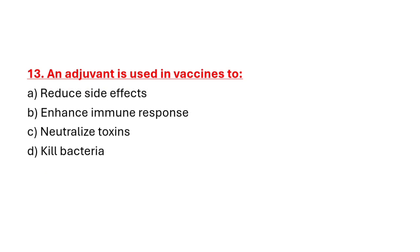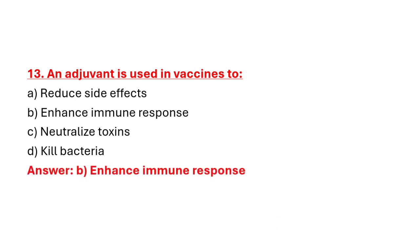Question 13: An adjuvant is used in vaccines to. Option A: Reduce side effects. Option B: Enhance immune response. Option C: Neutralize toxins. Option D: Kill bacteria. Correct answer is Option B: Enhance immune response.